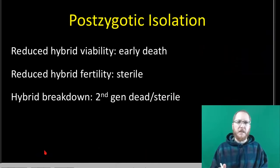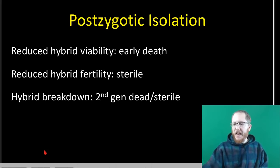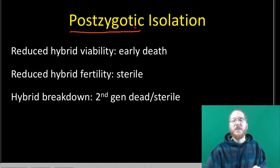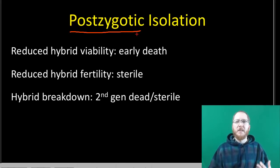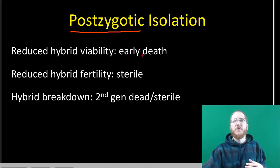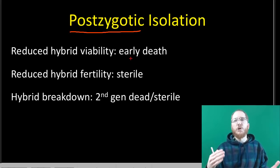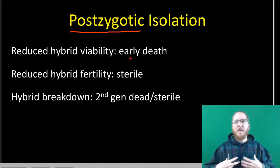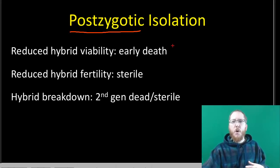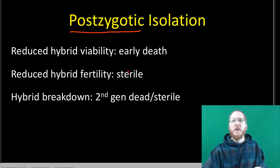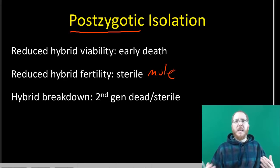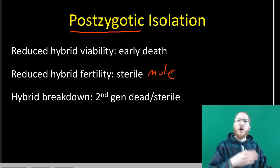That's pre-zygotic isolation. Now post-zygotic isolation is where we do get a fertilization event — some type of pregnancy — but things still don't turn out well in the end. The first type is reduced hybrid viability, where the offspring will normally die during the pregnancy or shortly thereafter. The offspring is just not going to be healthy enough to make it to adulthood. Then there's reduced hybrid fertility, which is something like a mule, where it's born but it's sterile — it can't reproduce with other mules, donkeys, or horses.